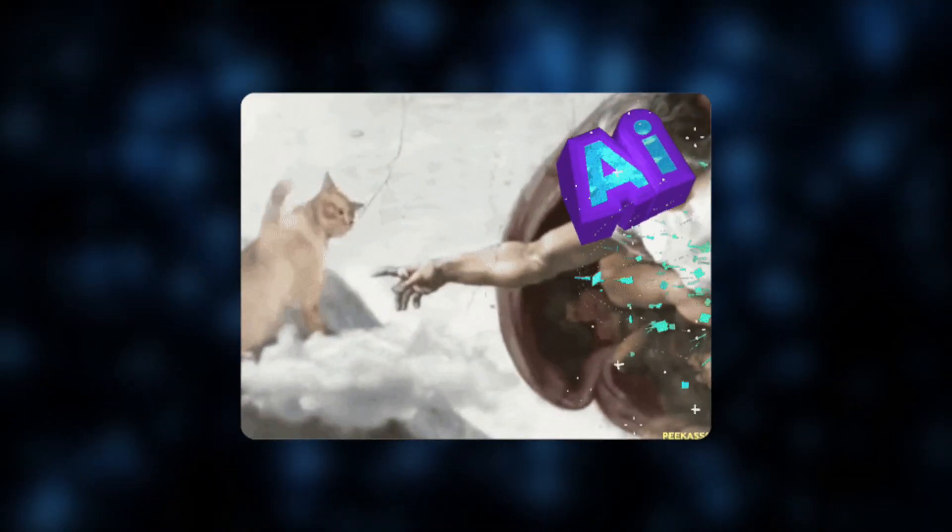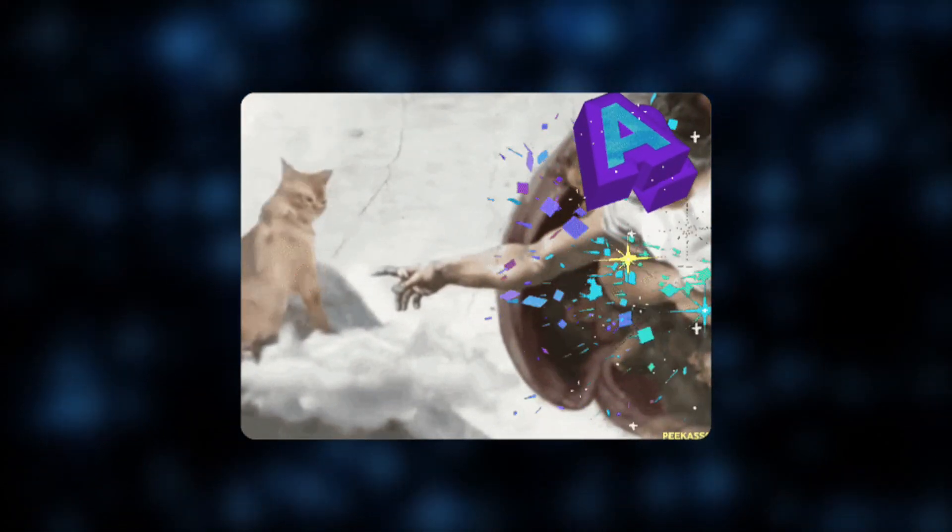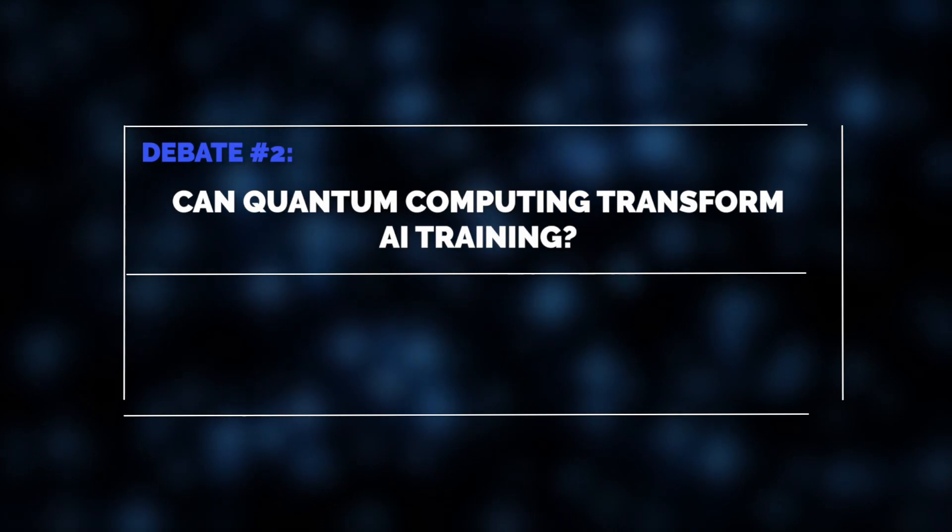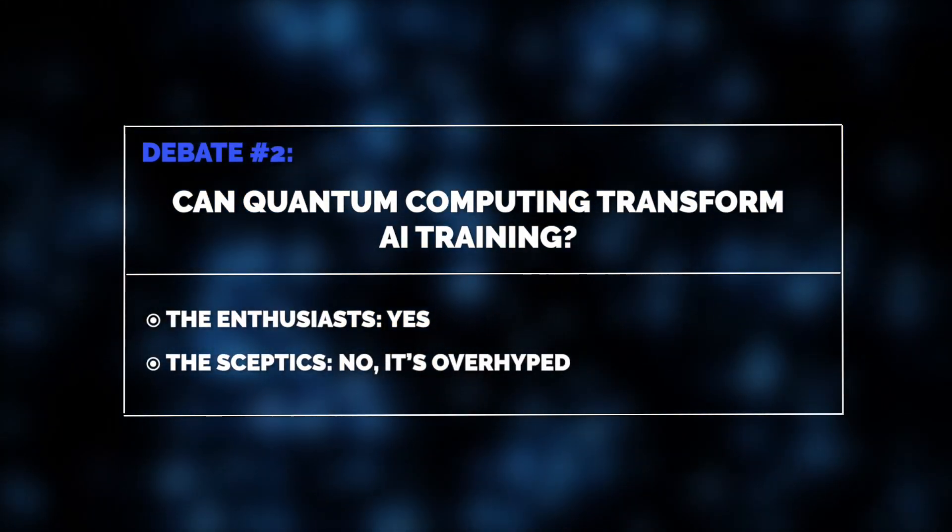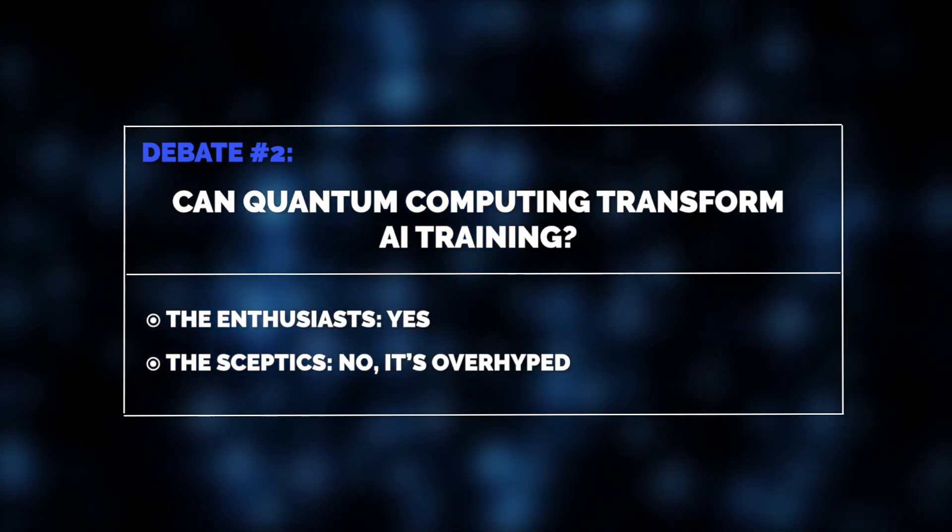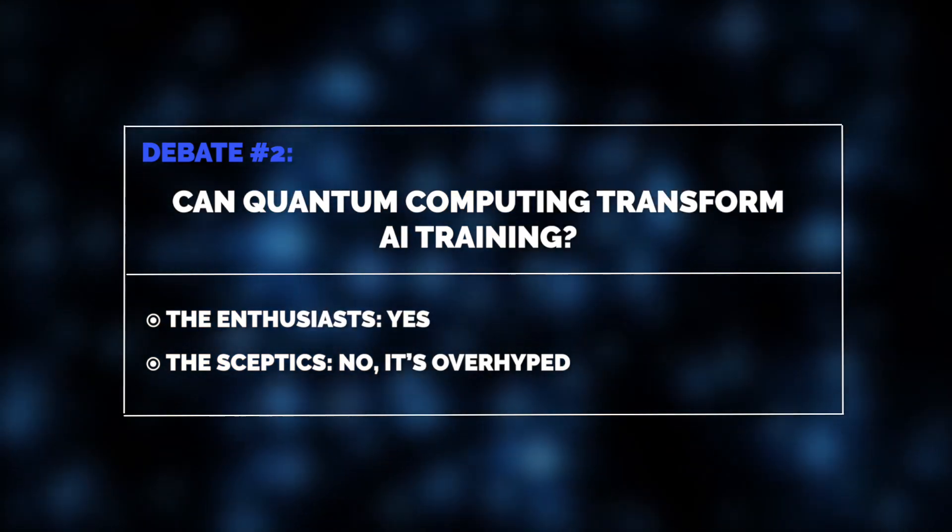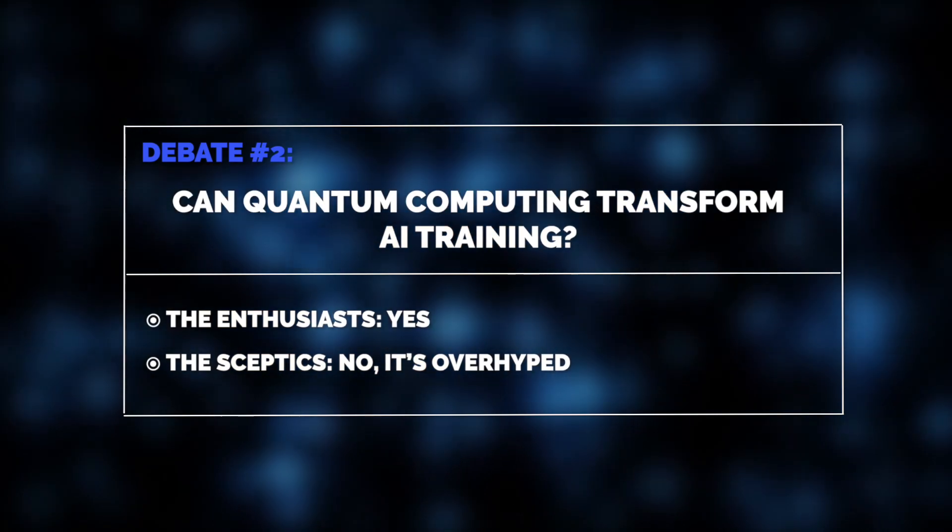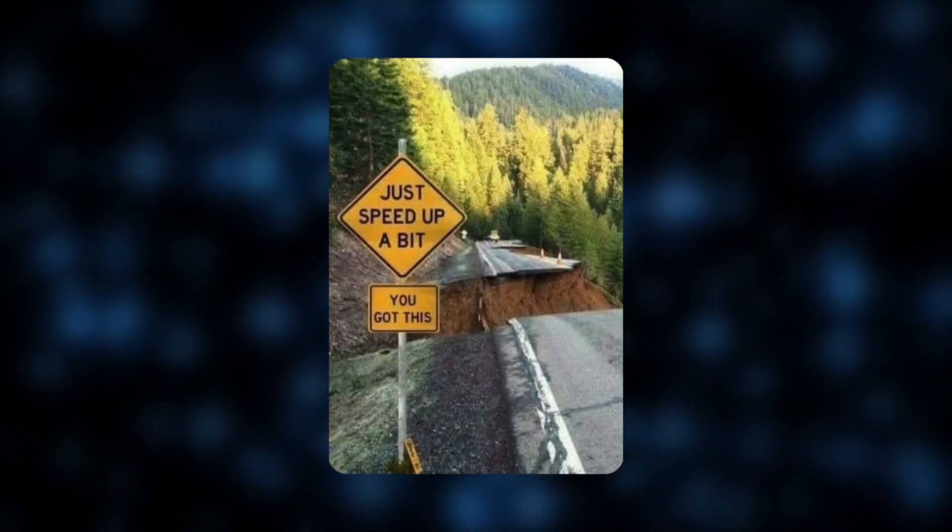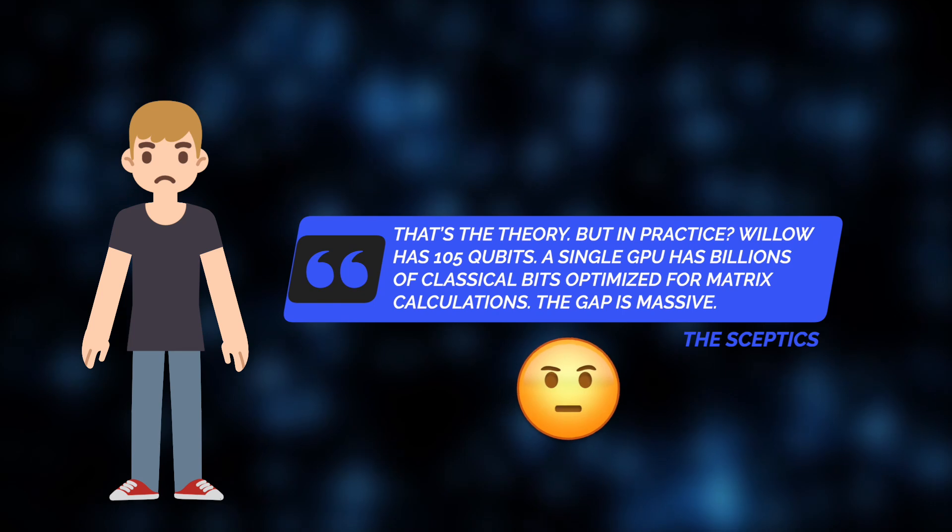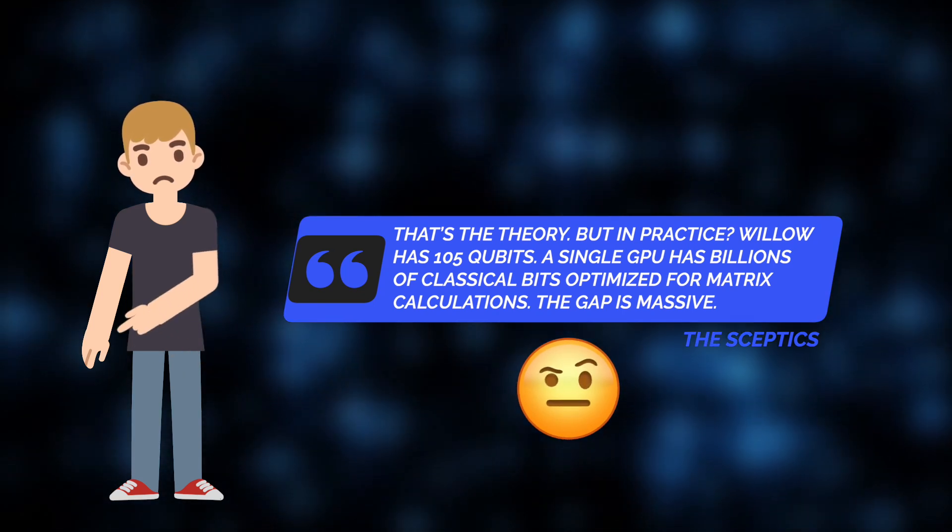Another key aspect is quantum computing's role in AI. Jelvix enthusiasts highlight its potential to revolutionize AI training. Here's how. Traditional AI training relies on gradient descent, a step-by-step method for refining neural networks. Quantum computing, however, could explore all possible configurations at once, dramatically speeding up the process. However, the skeptics denied it, stating theory and practice are vastly different. And the technological gap between Willow quantum chip and AI remains immense.